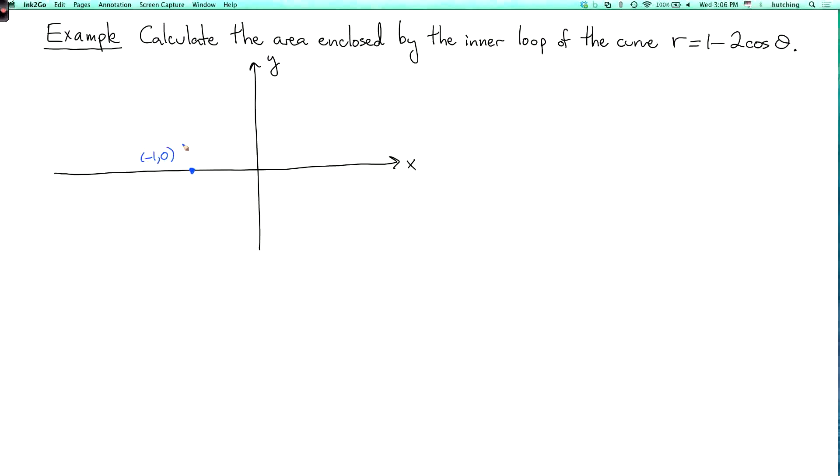And r will continue to be negative until cosine theta equals a half. That will happen at theta equals pi over 3.